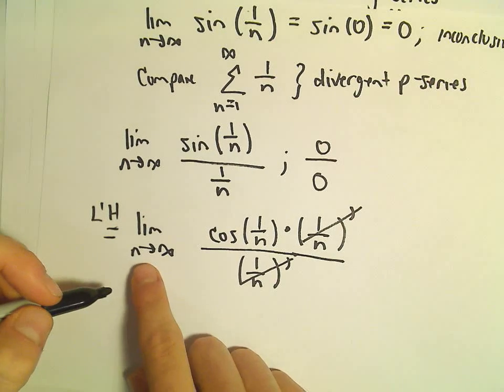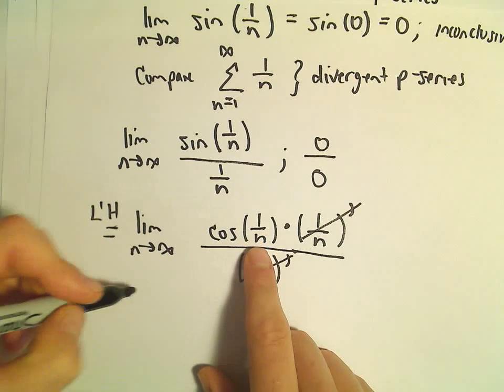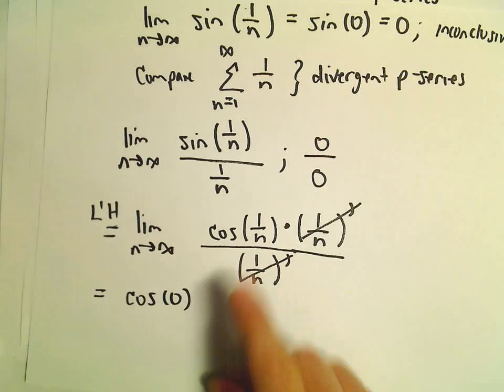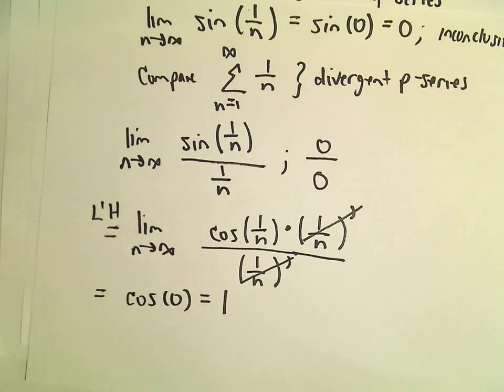Well, now we're left with the limit as n goes to infinity of cosine 1 over n. That's going to give us cosine of 0. Cosine of 0 is 1.